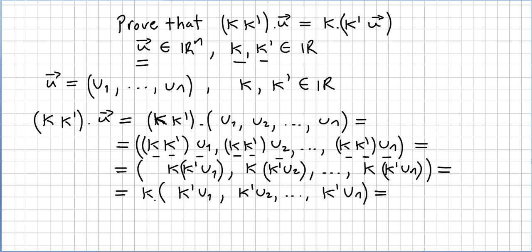Now that I have k times (k' times u1), k times (k' times u2), k times (k' times un), I can factor k out. So I take k out and I have k times (k' times u1, k' times u2, ..., k' times un). What I have inside the brackets is k' times u1, k' times u2, ..., k' times un, so I can factor k' out as well.